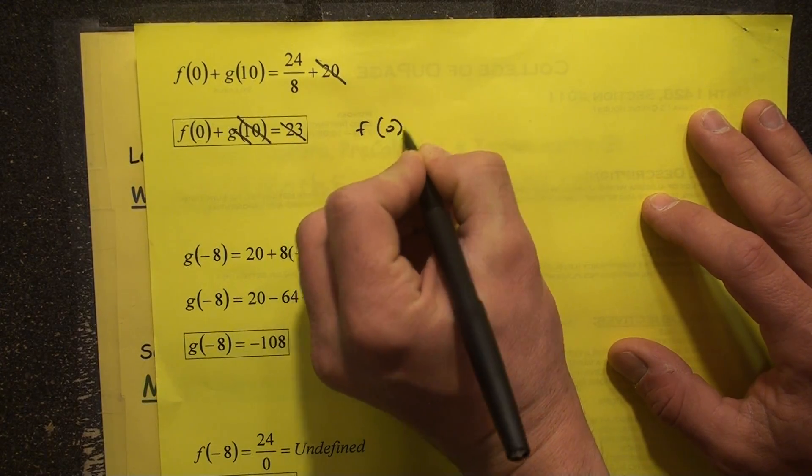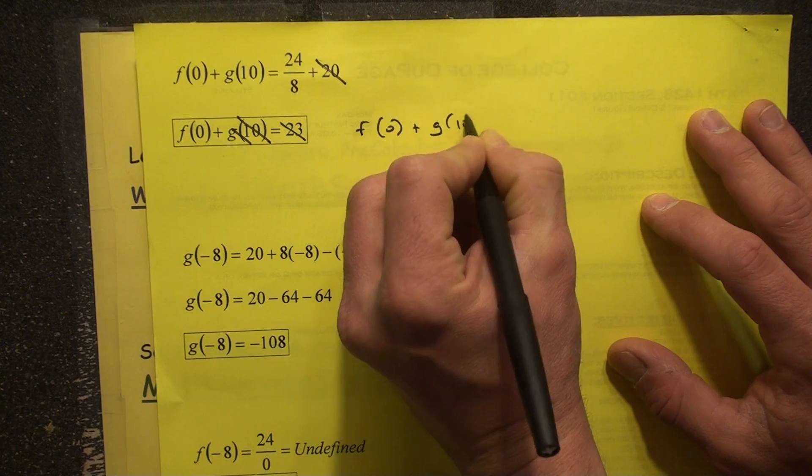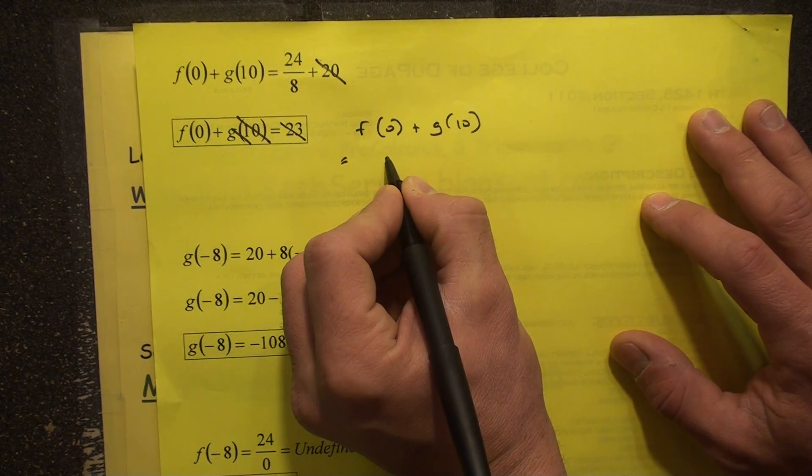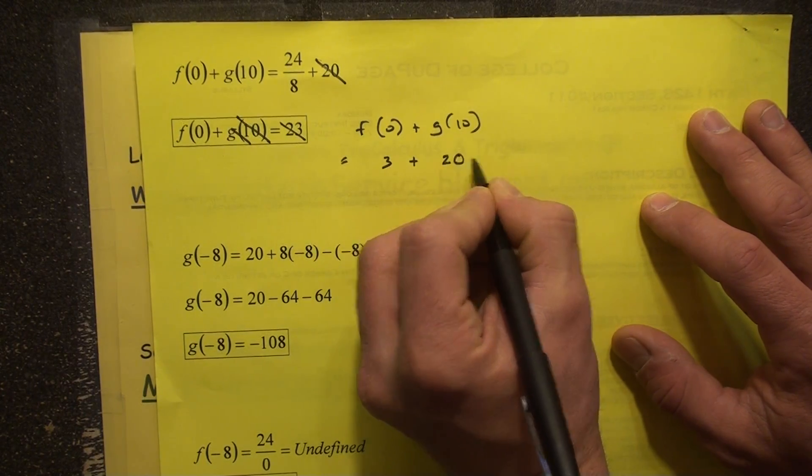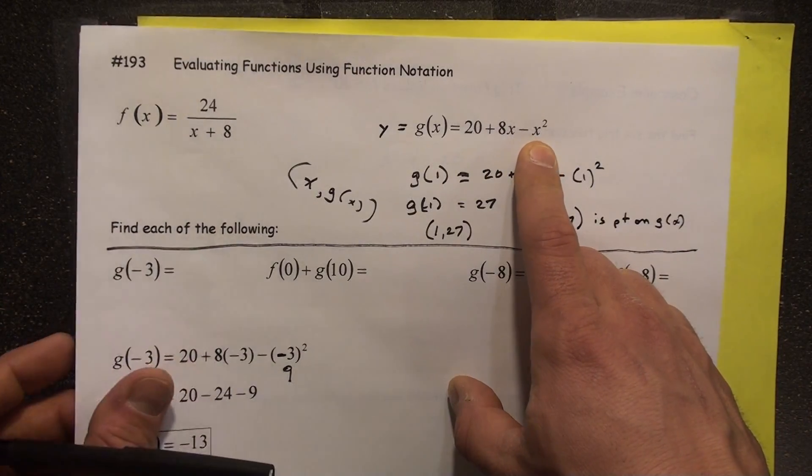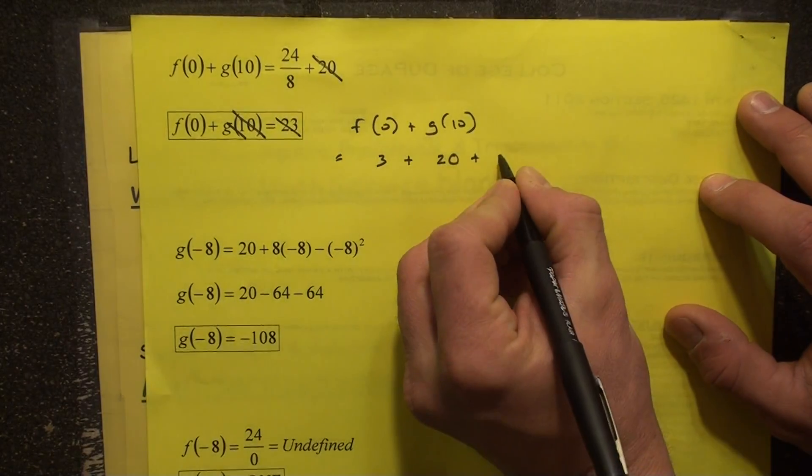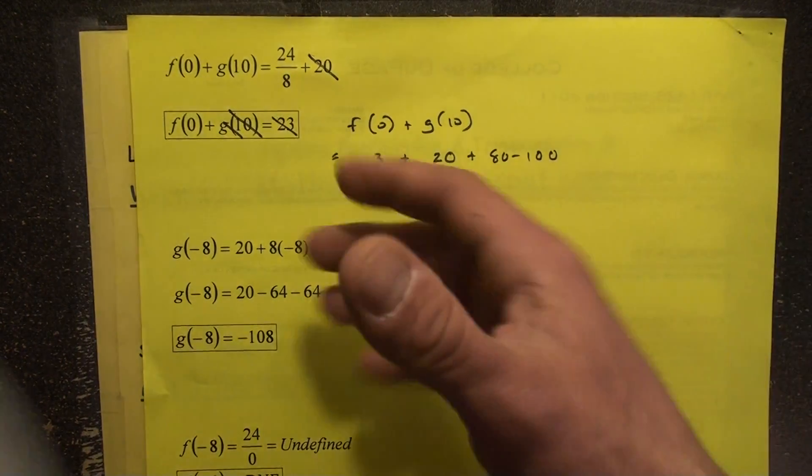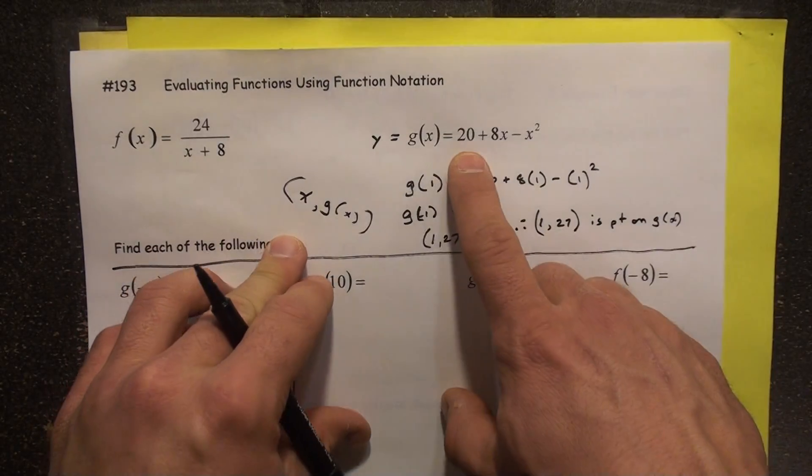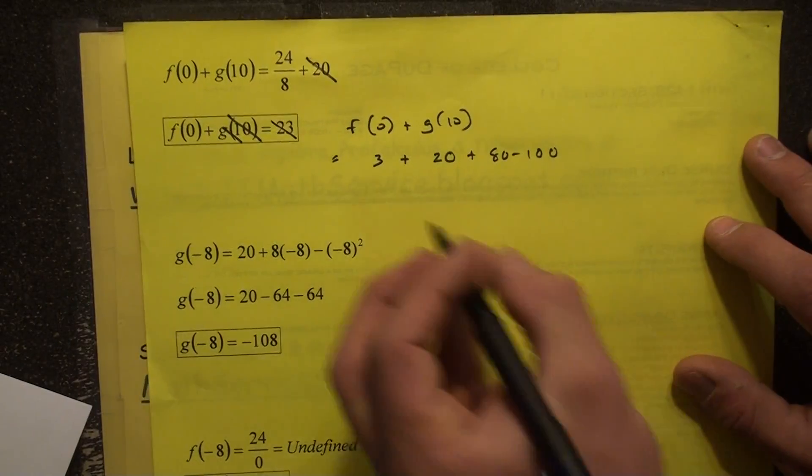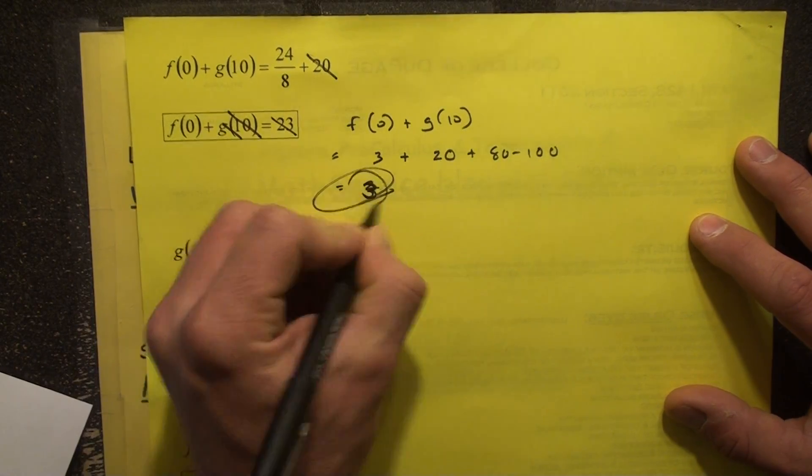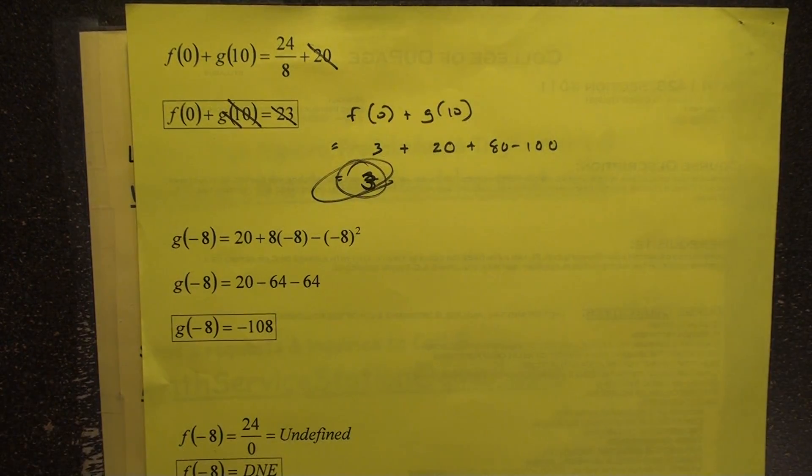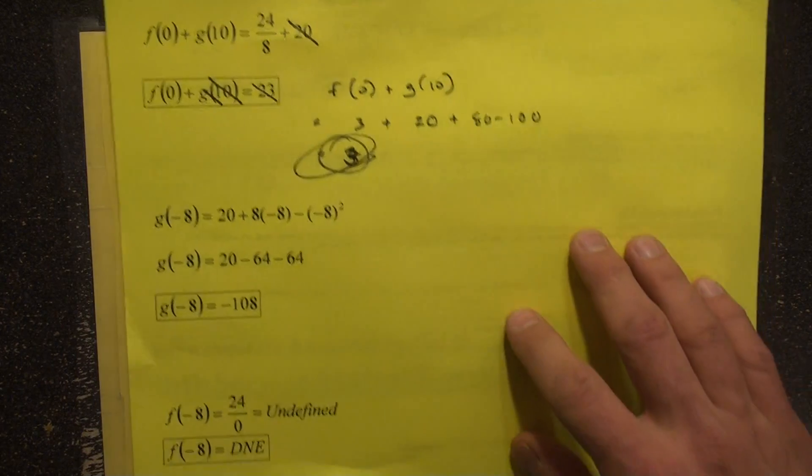So we've got f of 0 plus g of 10. f of 0 is definitely 3. g of 10 is what? It's going to be 20 plus 80 minus 100. Do you see why? Because you plug a 10 in. So 20 plus 80 minus 100. That would end up being 0. So you'd end up with 3. So we could say that f of 0 plus g of 10 equals 3.